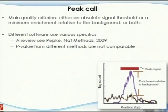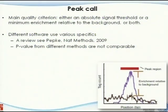For peak quality, the main quality criterion is either an absolute signal threshold, a minimum enrichment relative to the background, or both. Different algorithms call peaks using different criteria — some use absolute signal threshold, others require enrichment over a certain background level, and sometimes algorithms require both. Different software uses different specifics. A key conclusion from a review paper is that p-values from different methods are not really comparable to each other.